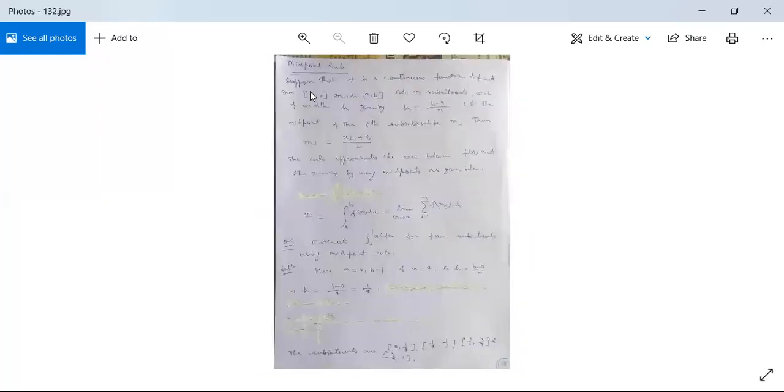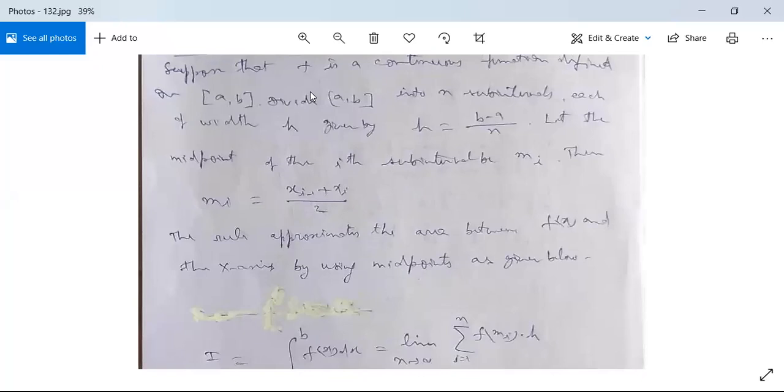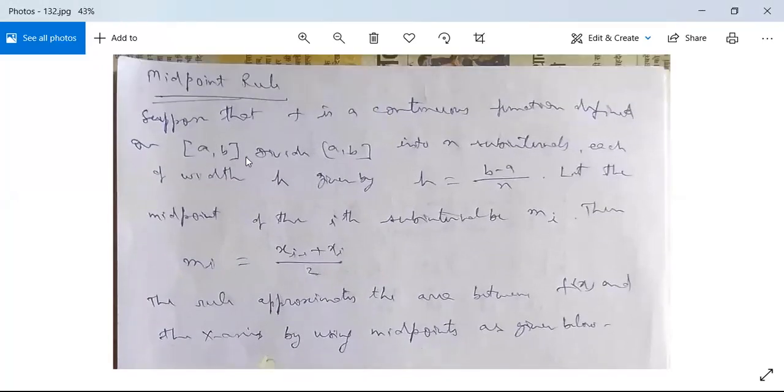Next we have another method or another rule which is called the midpoint rule. First we will see its theory and then we will see an example on midpoint rule. Suppose that f is a continuous function defined on closed interval [a, b].